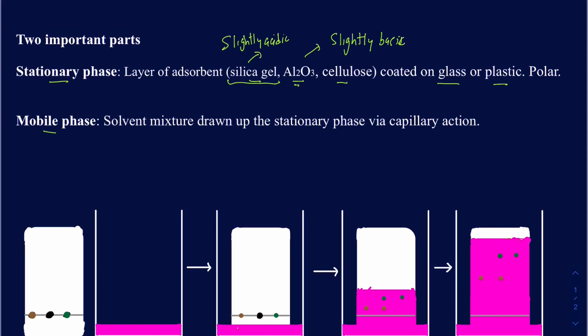Regardless of the type of stationary phase, they are all going to be polar. What that really means is, if you have a compound in the mixture that's polar, it will hold onto the stationary phase with a stronger force than a compound that's non-polar. As a result, when it ascends onto the stationary phase, a non-polar compound will move faster than a polar compound. TLC is all based on the affinity of the compound toward the stationary phase and also toward the mobile phase.